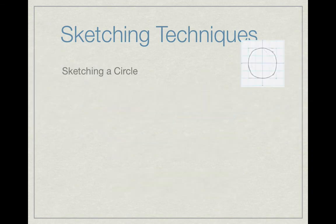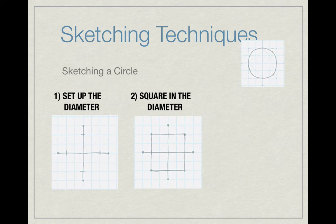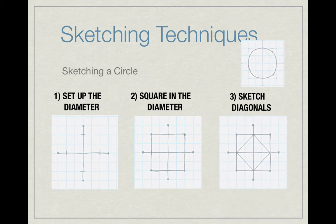The sketching techniques for a circle are a little different. Step one, we need to set up the diameter. This will be the overall size of the circle. As you can see in the top right hand corner, some erase marks. We're going to take you through building that circle. Step number two, square in the diameter. A circle, believe it or not, when freehand sketch starts out as a square.